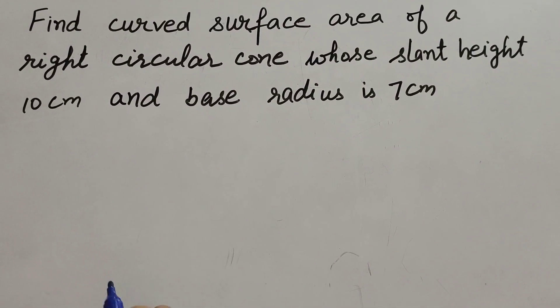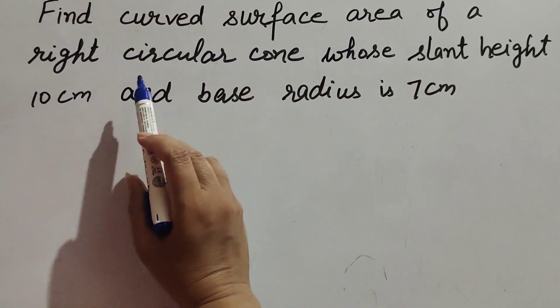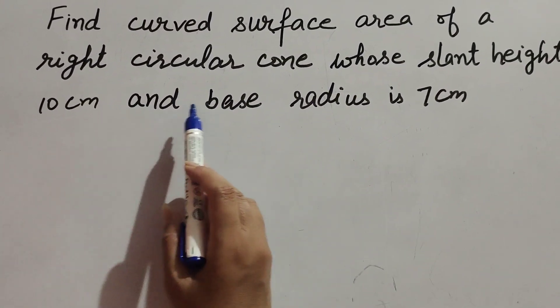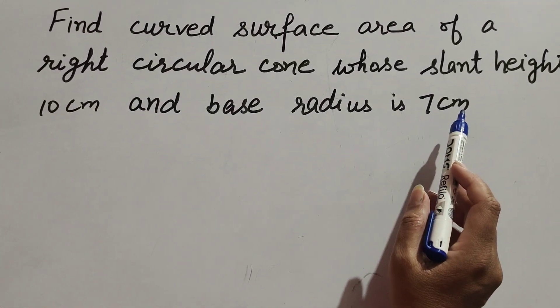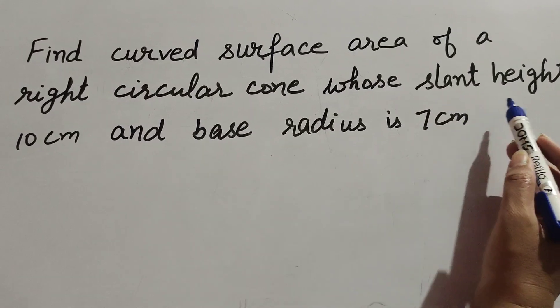Hello friends, welcome to my channel. In this video we discuss: find curved surface area of a right circular cone whose slant height is 10 cm and base radius is 7 cm.